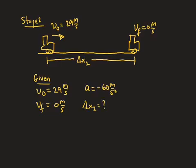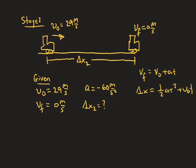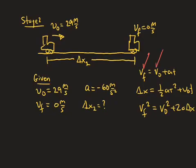One of the difficult things about solving kinematics problems is figuring out which equation to use. A trick you can always use is to write all three kinematics equations down and check off your known variables. We know v_final — check. We know v_naught — check. Acceleration is known — check. Time spent in stage 2 is unknown. Even though there's only one unknown in the first equation, it's not what we're looking for — we're not looking for time, so we cross out that equation. We're looking for displacement, delta x2.